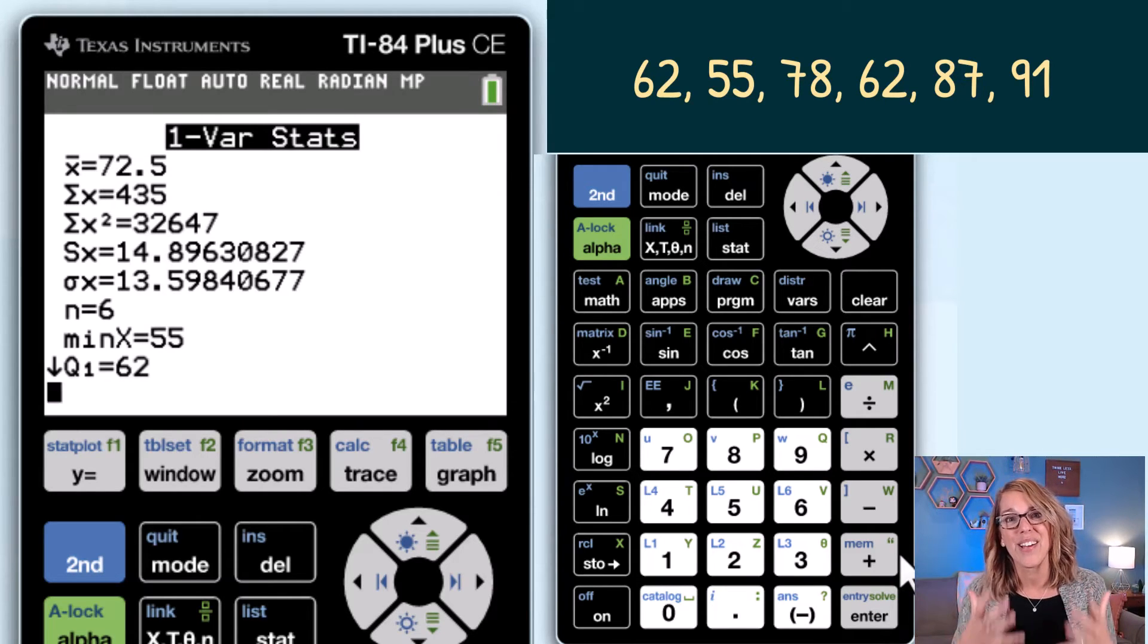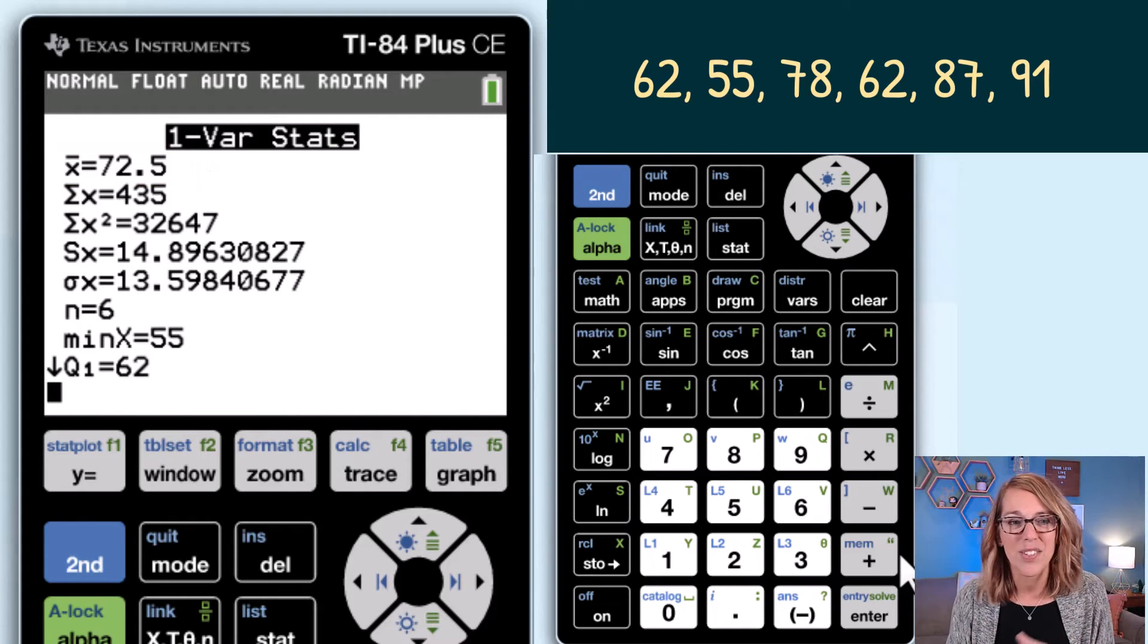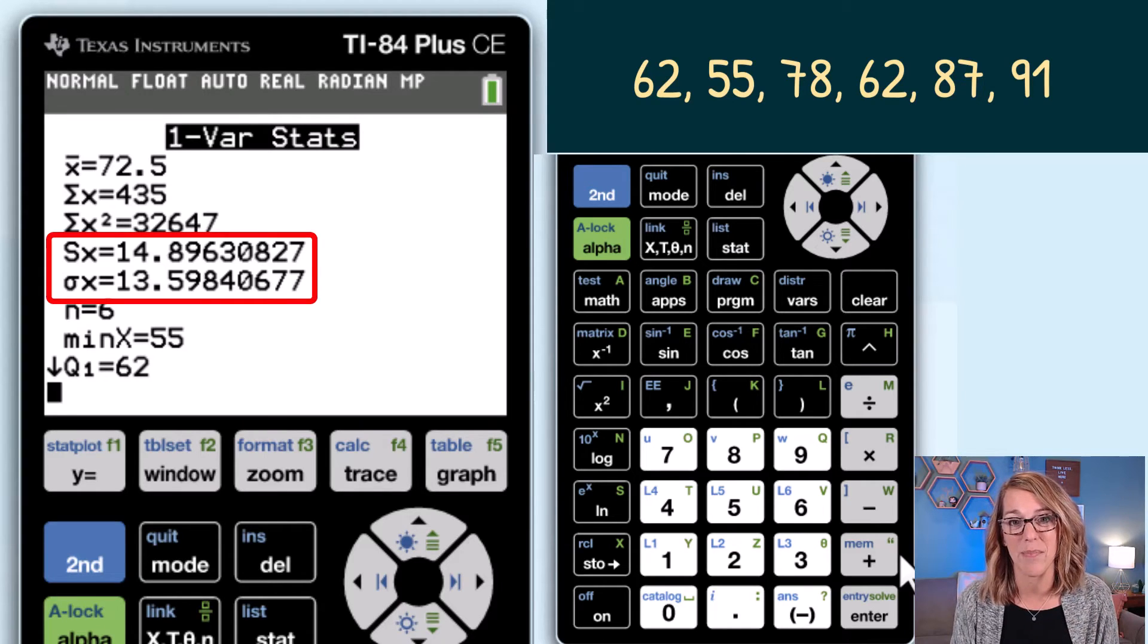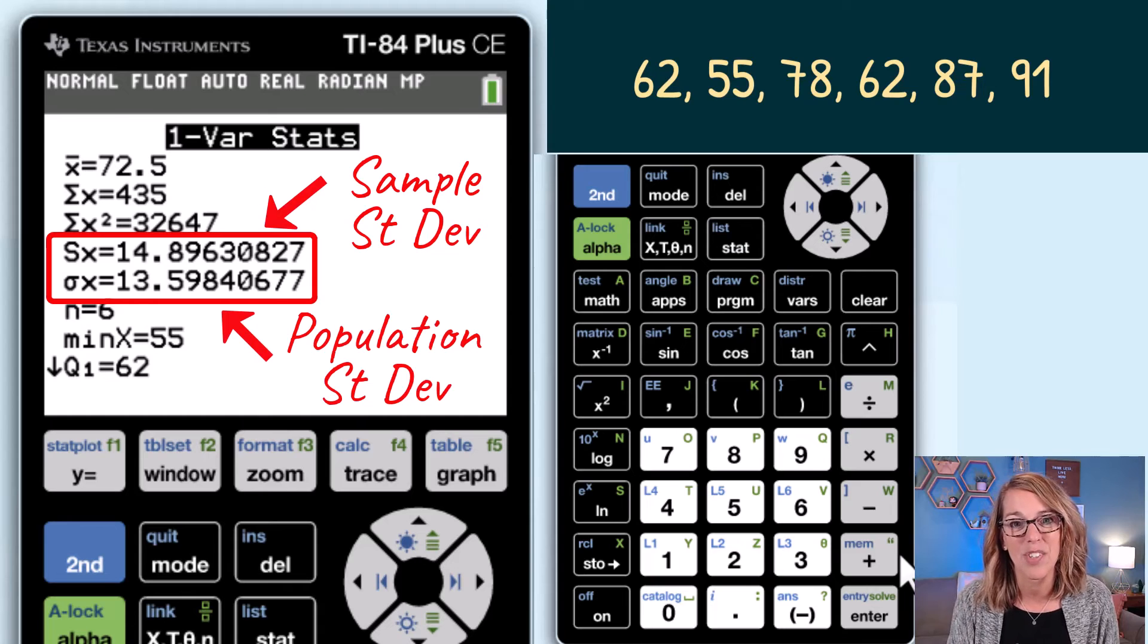Now I've got all of these great measures. That very first measure at the top x bar 72.5. That's my mean. I don't use the next two values but that's the sum of all your numbers, the sum of all of them squared, but the next two after that are my standard deviations. The sx is my sample standard deviation. Notice how it's a little bit bigger than the sigma x which is my population standard deviation.